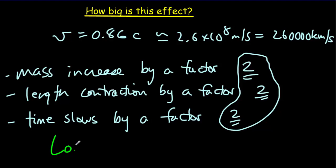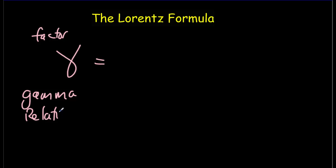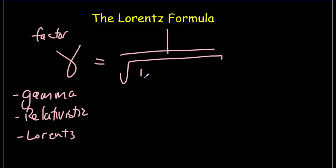And that formula is called the Lorentz formula. So let's write down the Lorentz formula. It starts with this gamma here, and that's the factor that we've been talking about. And it goes by different names. It's sometimes called the gamma factor because this is the Greek letter gamma. It's also called the relativistic factor or the Lorentz factor. But it's all the same factor. On the other side of the equation, you're going to get an expression in terms of the fraction of the speed of light. So it's going to be 1 over the square root of 1 minus, there's the fraction, v over c squared.